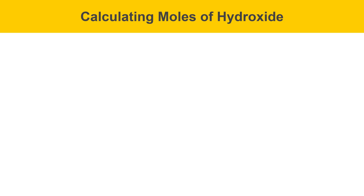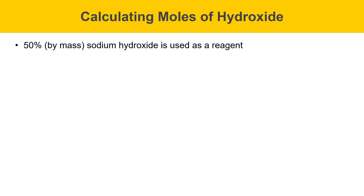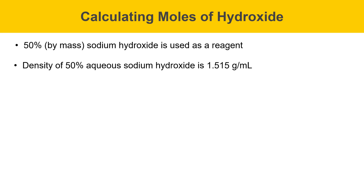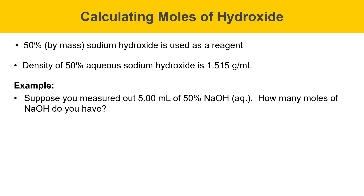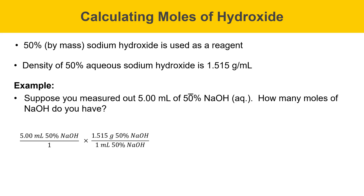On this slide, I'm going to go over calculating moles of hydroxide used in this reaction — a calculation that often gives students trouble. We'll be using 50% by mass sodium hydroxide and water as a reagent. The density of 50% aqueous sodium hydroxide is 1.515 grams per milliliter. For example: suppose you measured out 5.00 milliliters of 50% aqueous NaOH — how many moles of NaOH do you have? Start with the 5 mL measured out, then use the density term, which tells us there are 1.515 grams of 50% NaOH in every 1 milliliter.